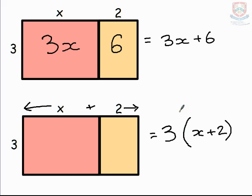Now we've already seen that the answer has to be 3x plus 6. But how does that happen? Surely 3 times x is just 3x. But then we need to multiply the 2 as well.